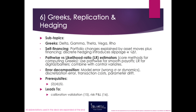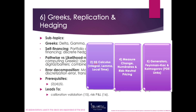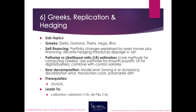Then Greeks, replication, and hedging — sensitivities plus the idea that you can replicate a payoff with dynamic trading. Subtopics include delta, gamma, theta, vega, rho, self-financing strategies, pathwise versus likelihood-ratio Greeks, and where hedging error comes from. Prerequisites are topics two, four, and five. This turns math into P&L explanations, lets you communicate with risk, and stress-test strategies before they blow up.